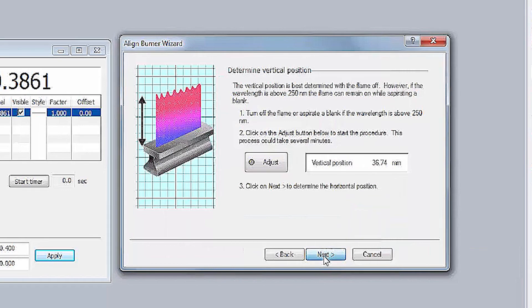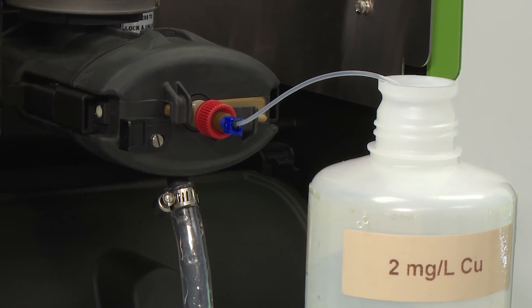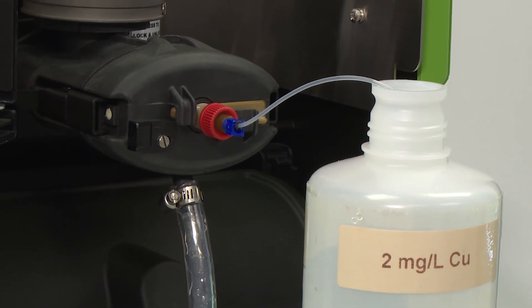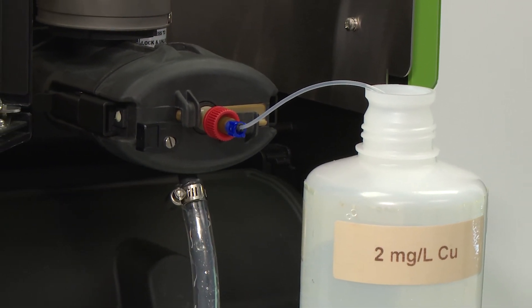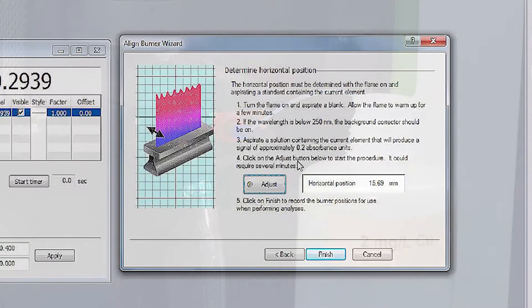Now horizontal alignment of the burner is performed. As indicated by the wizard, this position is best determined by aspirating a solution of setup element that will produce approximately 0.2 absorbance units. Click on the Adjust button to automatically align the burner's horizontal position.